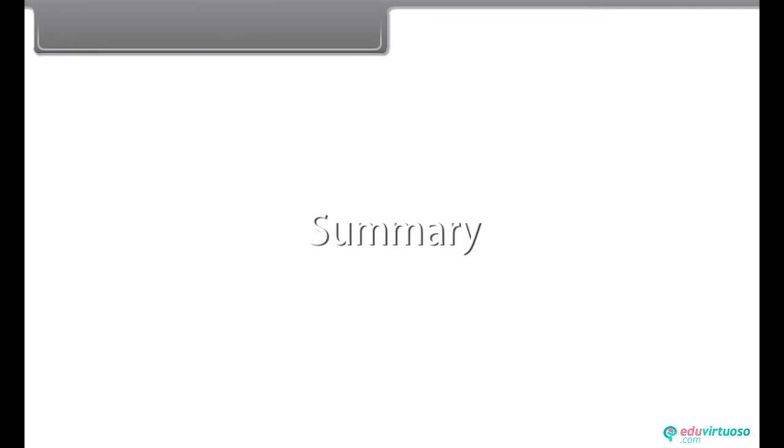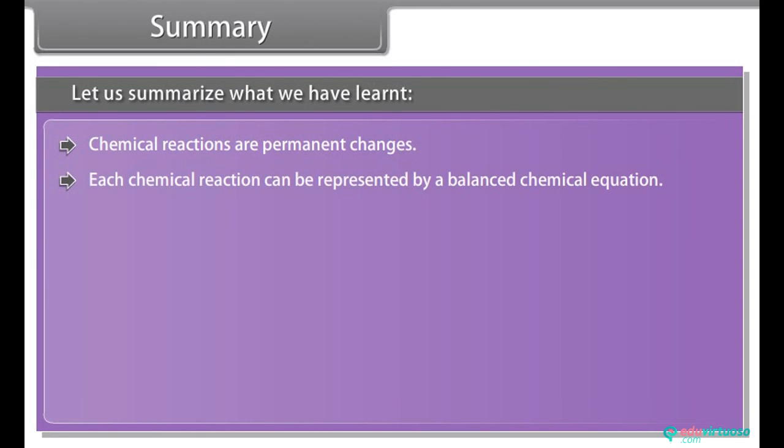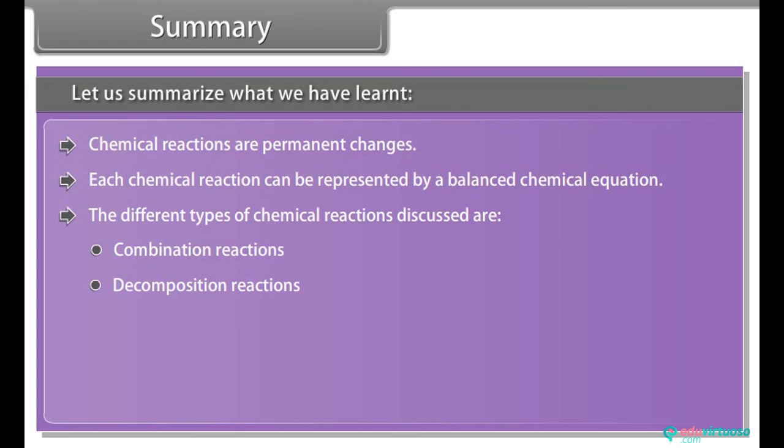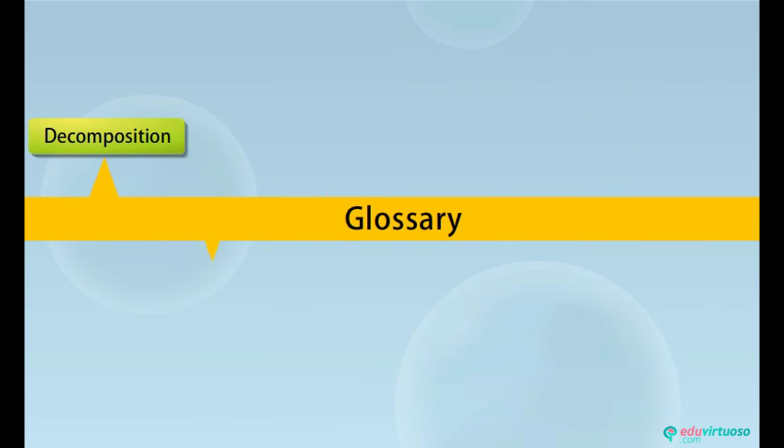Summary: Let us summarize what we have learnt. Chemical reactions are permanent changes. Each chemical reaction can be represented by a balanced chemical equation. The different types of chemical reactions discussed are: Combination reactions, Decomposition reactions, Displacement reactions, Double displacement reactions, Redox reactions. Thank you.